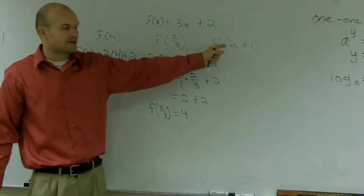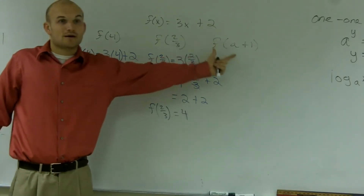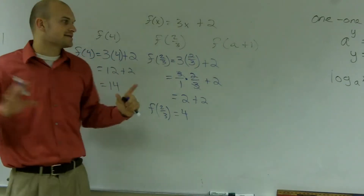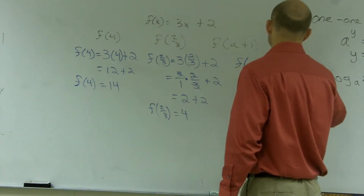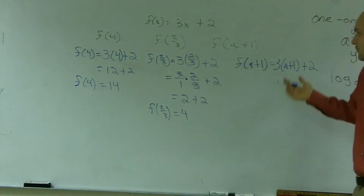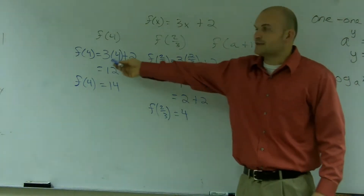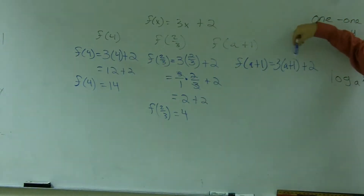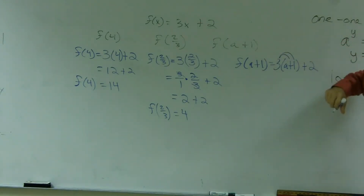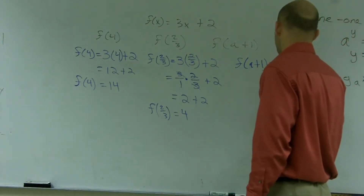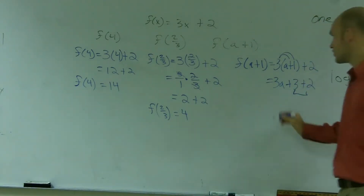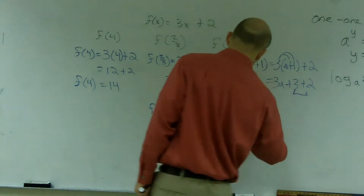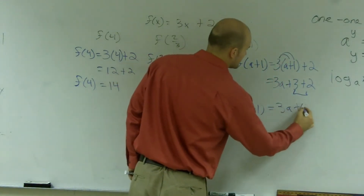The last one says evaluate the function for f of a plus 1. There are two terms in that input — it's okay, just follow the exact same steps. F of a plus 1 equals 3 times (a plus 1) plus 2. What do you do when you multiply 3 times a binomial — a parenthesis with two terms? You multiply 3 times a and 3 times 1. So 3 times a is 3a, 3 times 1 is 3, plus 2. I can now simplify: f of a plus 1 is equal to 3a plus 5.